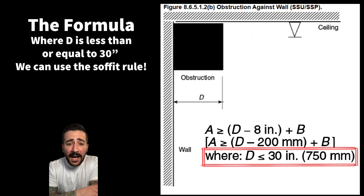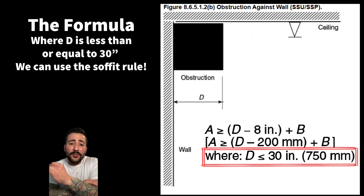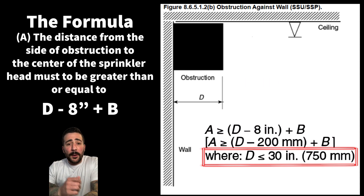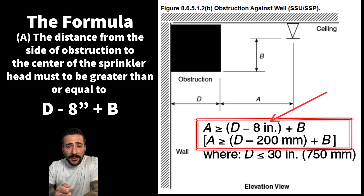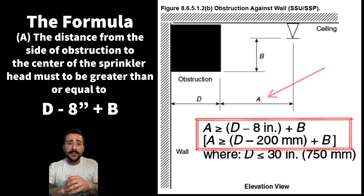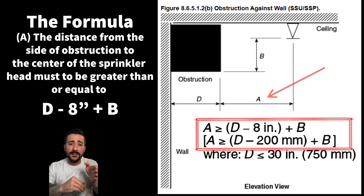Now on to the formula. First thing we have to make sure is that D is 30 inches or less. If the width of the obstruction is 30 inches or less, we always minus eight inches first. Then we add the distance from the bottom of the obstruction to the sprinkler deflector — we add those together and that will give us A, the distance from the side of the obstruction to the center of the sprinkler head.